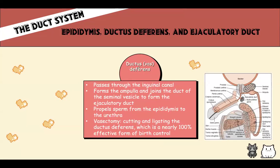The vas deferens, also known as the ductus deferens, passes through the inguinal canal and is part of the spermatic cord. It forms the ampulla, joins the duct of the seminal vesicle, and forms the ejaculatory duct, propelling sperm from the epididymis into the urethra. A vasectomy — cutting and ligating the vas deferens — is a nearly 100% effective form of birth control.